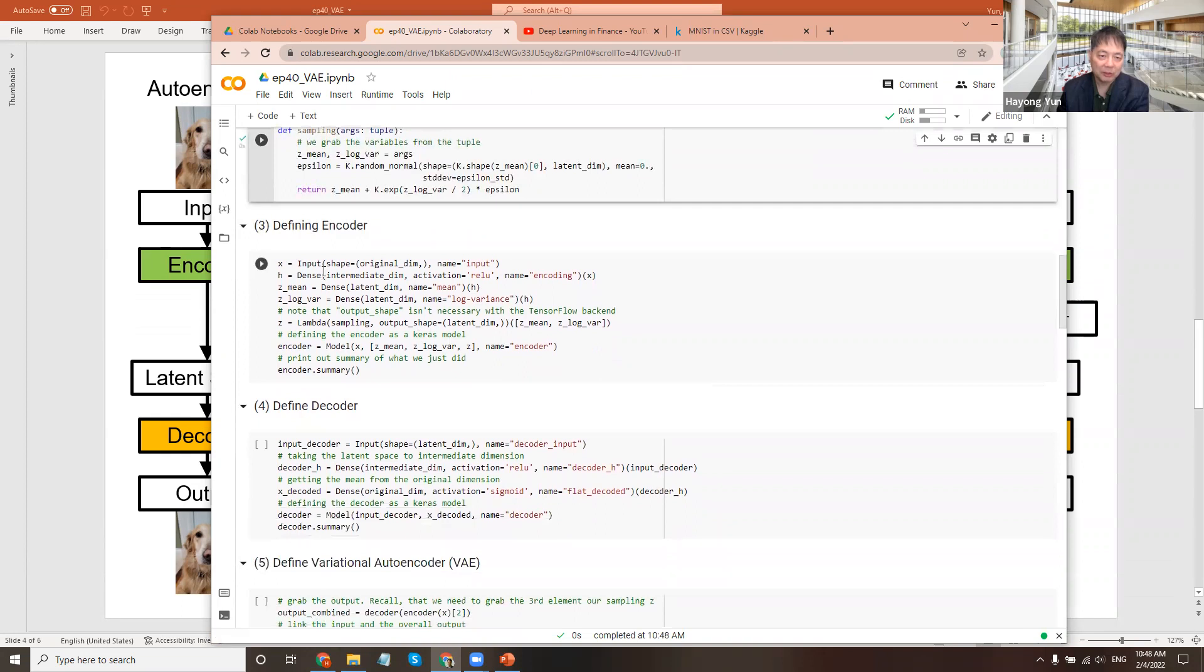The encoder is similar to the autoencoder, except that you have an input, then the middle layer, and then it goes to the dense node of mean. So to here, the first dense layer from x to h. The h sends one to mean and one to log of variance. And then from that distribution, you pick a random number of latent space z.